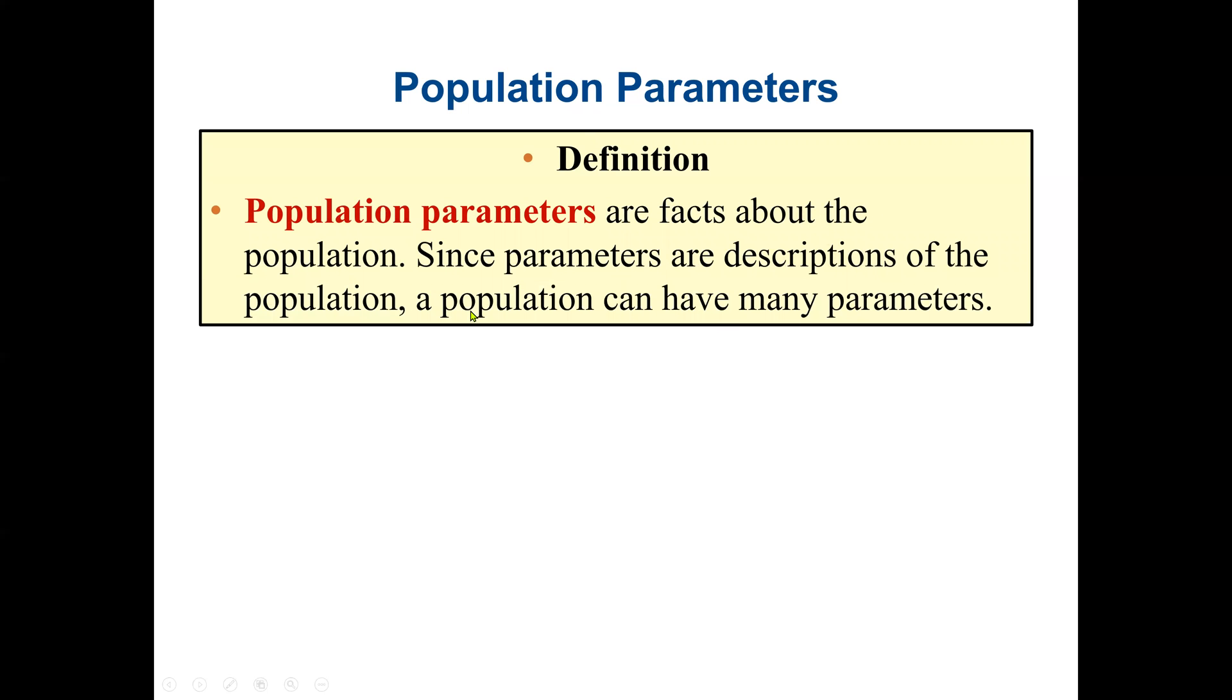Then we have population parameters. So population parameters will be the characteristics of the population. Since parameters are descriptions of the population, a population can have many parameters. So a parameter is more or less a characteristic of a population. An example would be a population's age, or their weight, or their names, location, etc. These are all parameters of the population.